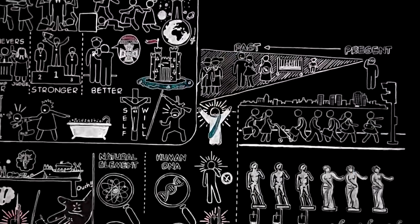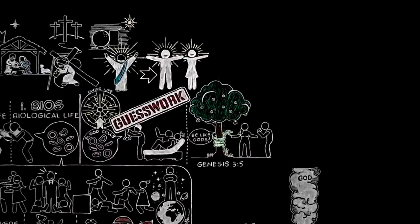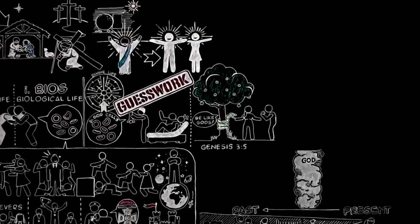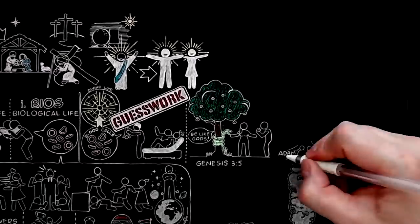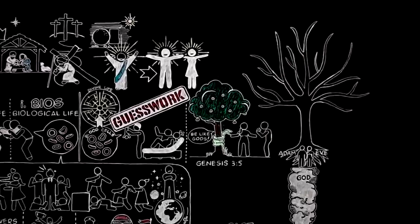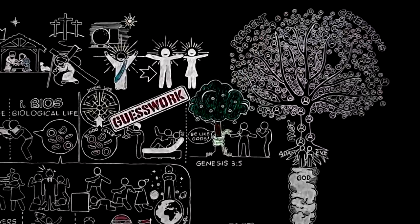If you could see humanity spread out in time as God sees it, it would not look like a lot of separate things dotted about. It would look like one single growing thing, rather like a very complicated tree. Every individual would appear connected with every other.